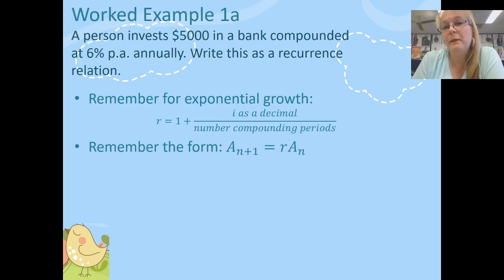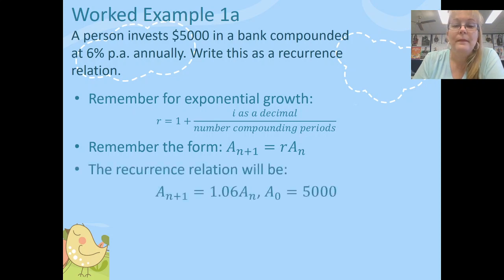Now this is our form from the QCAA's formula sheet for a recurrence relation for compound interest. So we're going to simply substitute the two pieces of information we've been given. We know that the starting amount, A_0 is going to be 5,000 and we also know that the interest rate is going to be 1.06. So we write the recurrence relation exactly like this. A_{n+1} equals 1.06 A_n. And then we need to put a comma and tell the reader what the starting value being the principal, A_0, is going to be. It's 5,000.